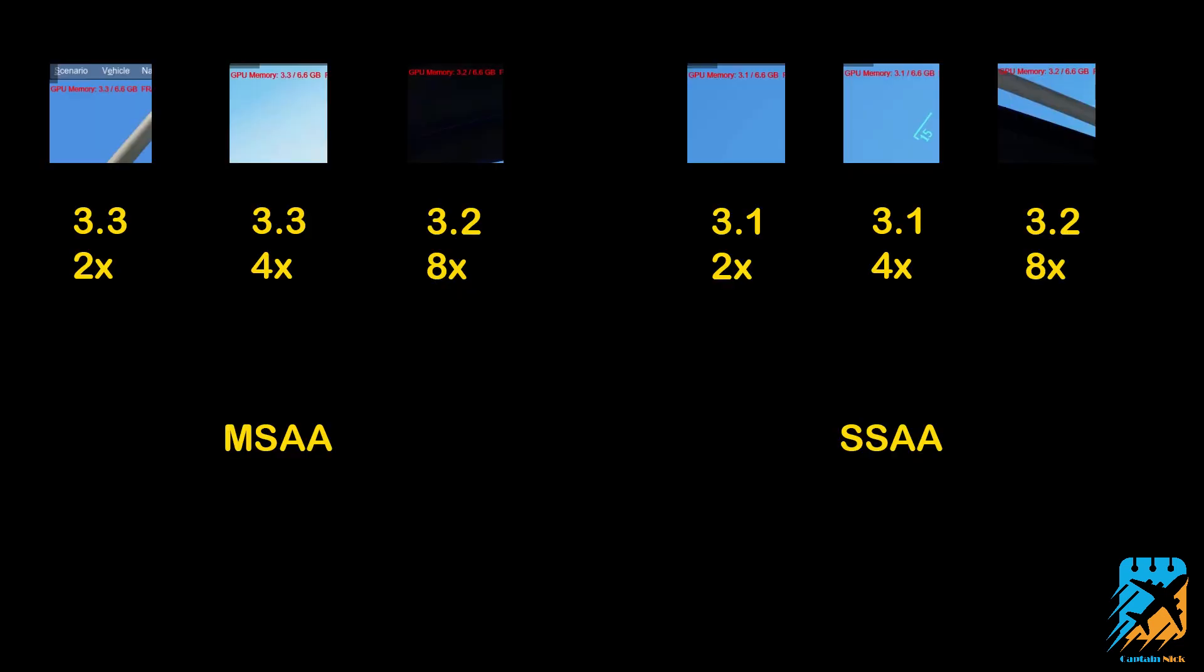First thing we're going to look at is the anti-aliasing. Running all the same settings across the board here, you see between MSAA and SSAA there's not much of a difference in VRAM usage, anywhere from 3.3 all the way down to 3.1. I would say that's probably more within the margin of error here. I'm doing everything right outside Randolph Air Force Base in the default flight in the F35. When it comes to VRAM usage, I'm not seeing any real difference between any of the different built-in anti-aliasing methods. Obviously you're going to have a frame rate hit, but that's not what this video is about. This video is all about VRAM.